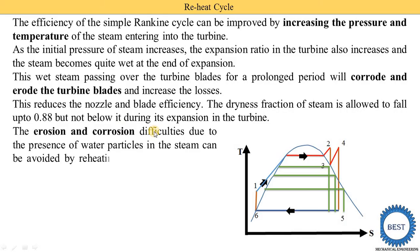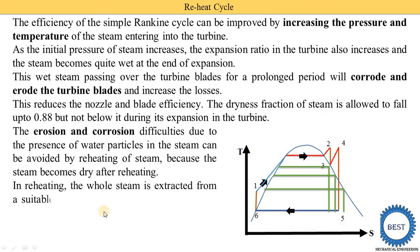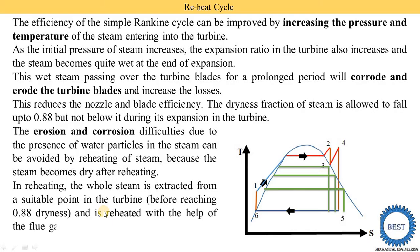The erosion and corrosion difficulties due to the presence of water particles in steam can be avoided by reheating the steam. Without reheating, expansion from point two to condenser pressure gives a low dryness fraction point. After reheating and then expanding, the exit point of the turbine moves to the right — closer to the saturation curve — meaning we achieve higher dryness fraction. Higher dryness fraction means the life of the turbine is increased because corrosion and erosion are reduced. In reheating, the whole steam is extracted from a suitable point in the turbine — the full steam is taken from the high pressure turbine at point three — and its temperature is increased using flue gases in the boiler, then expanded in another turbine.